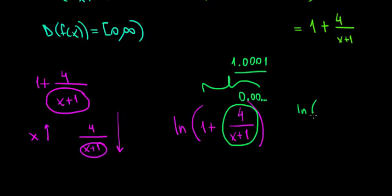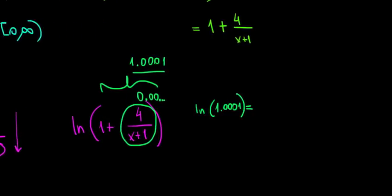What is ln of 1.0001? Let's write it here in our calculator. Let's see what it means to have ln of a number slightly greater than 1. ln of 1.0001 equals to 0.00009. Let's give a number even slightly bigger.